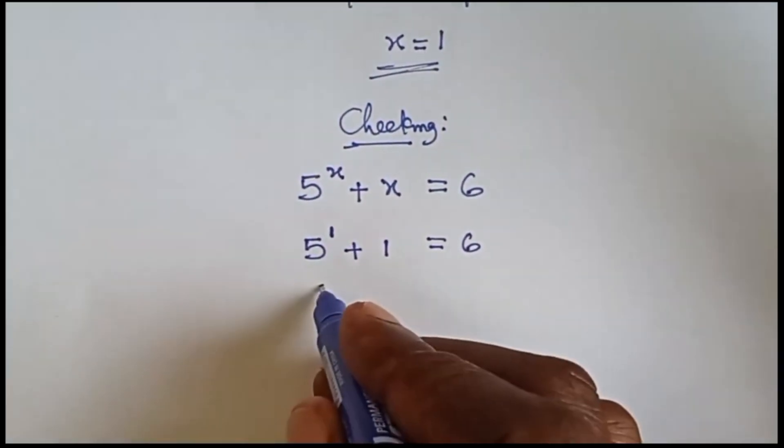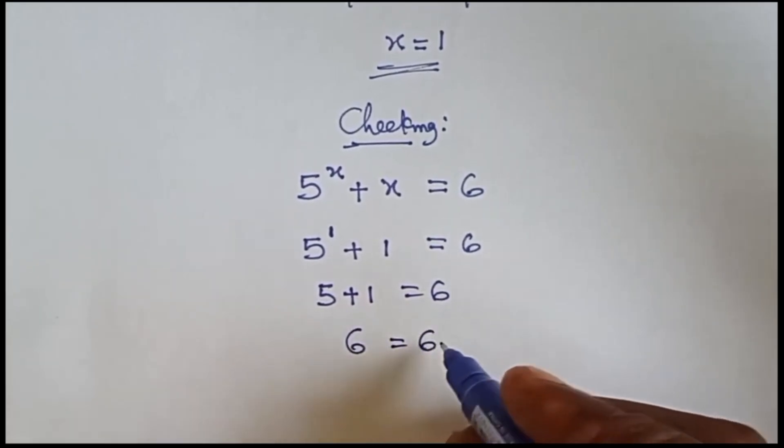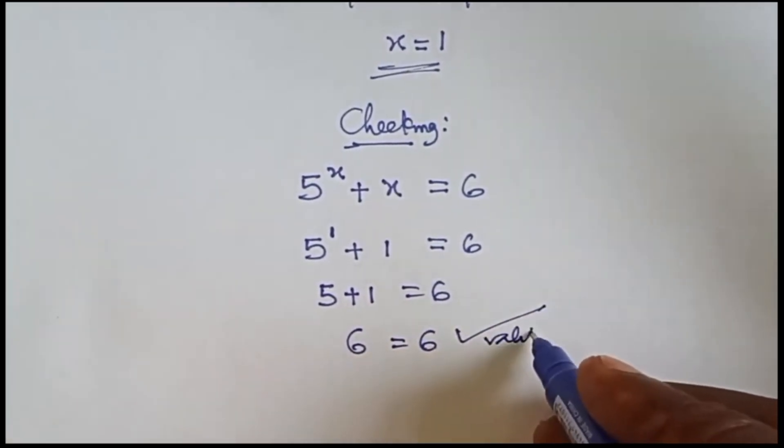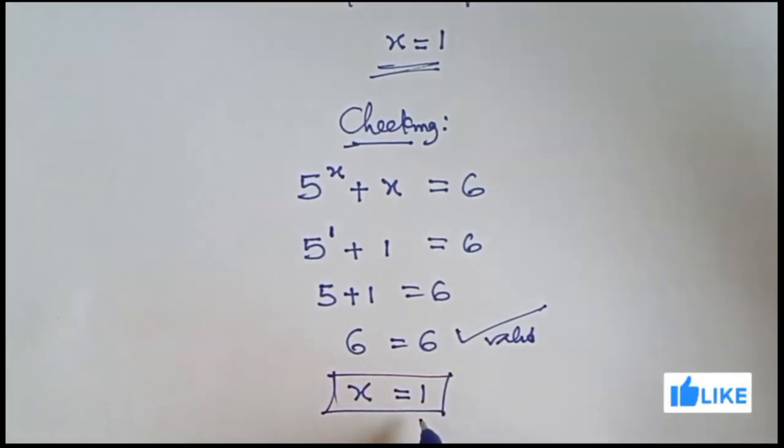5 raised to the power 1 is 5, so we have 5 plus 1 equals 6, and that is 6 equals 6. That shows that our answer x equals 1 is valid.